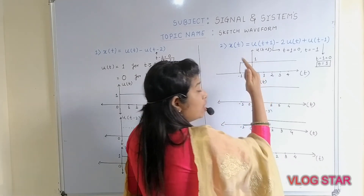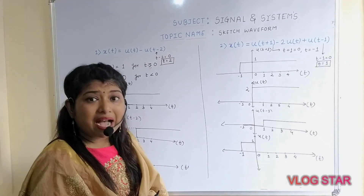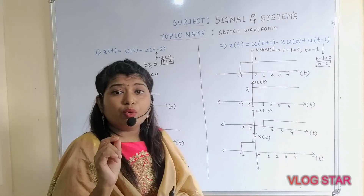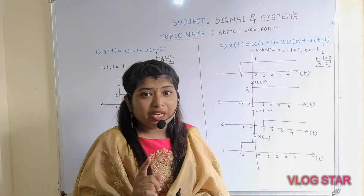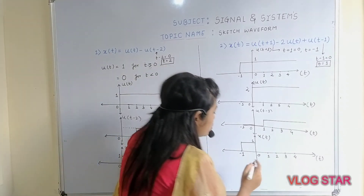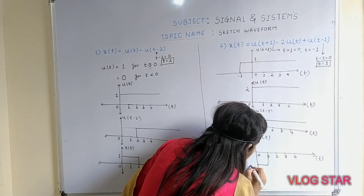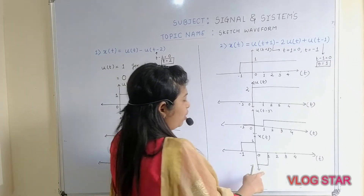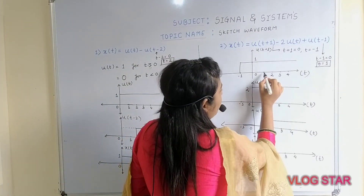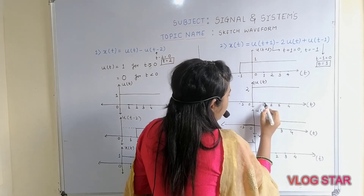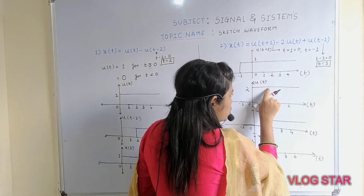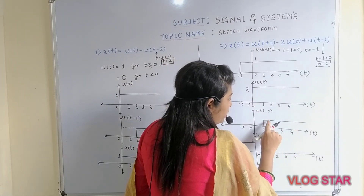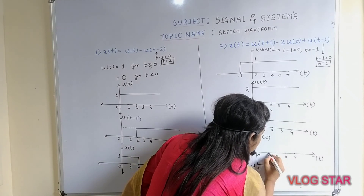For range 0 to 1: u(t + 1) amplitude is 1, 2·u(t) amplitude is 2, so 1 − 2 = −1. u(t − 1) amplitude is 0 for this range. The resulting amplitude is −1, plotted in the downward direction. For range 1 to 2: u(t + 1) is 1, 2·u(t) is 2, so 1 − 2 = −1; plus u(t − 1) amplitude 1 gives −1 + 1 = 0.